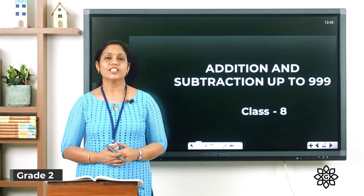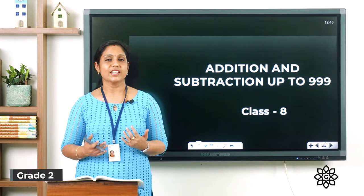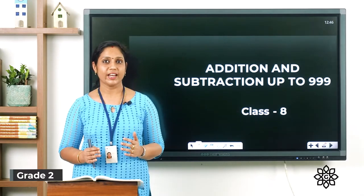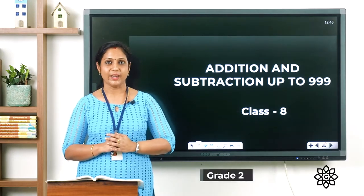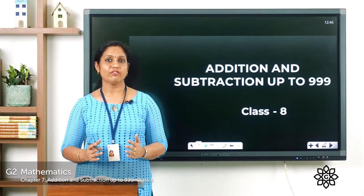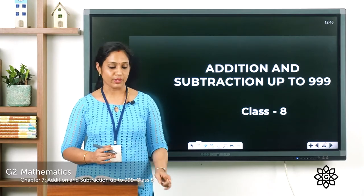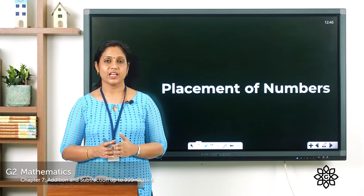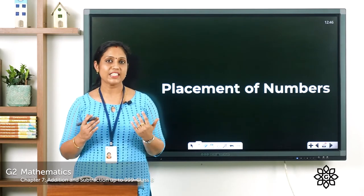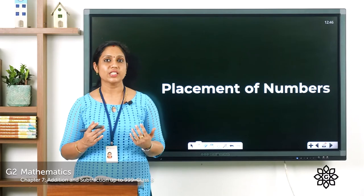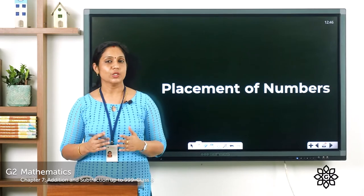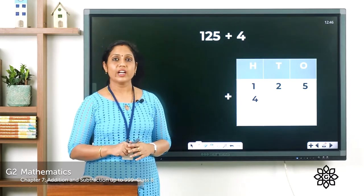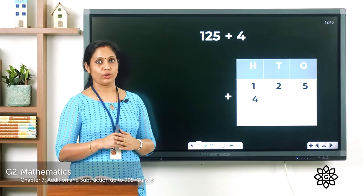Good morning everyone. Today in Maths, let's continue with our chapter Addition and Subtraction up to 999. Today we have the topic placement of numbers. Let's learn how to place numbers correctly, because only if numbers are placed correctly can we do addition and subtraction. So let's get started. We have 125 plus 4.